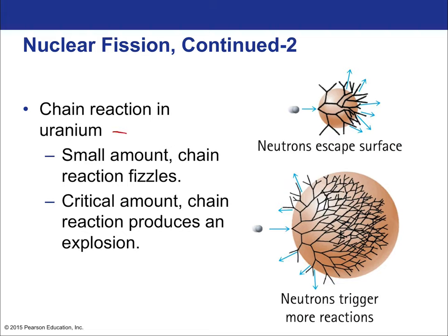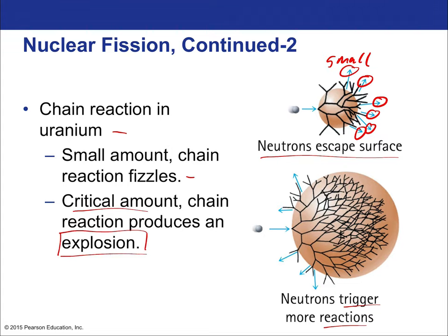In a small amount of uranium, the chain reaction fizzles out because neutrons escape the sample. The key factor is the volume-to-surface-area ratio: volume scales with the cube of distance while surface area scales with the square, so smaller samples have more surface area per volume, giving neutrons more opportunity to escape. But if the sample is large enough — a critical amount — you get an uncontrolled chain reaction, which leads to an explosion.